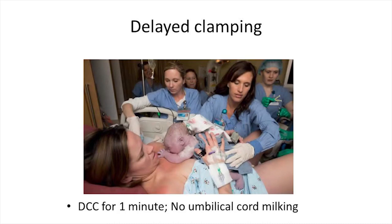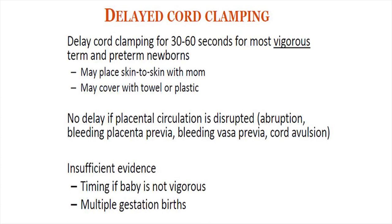Another important component of routine care is delayed cord clamping after 1 minute. Umbilical cord milking is not recommended as part of NRP. Delayed cord clamping is recommended for all vigorous babies, but is not recommended if there is placental circulation disruption — mainly abruption, bleeding placenta previa, bleeding vasa previa, or cord avulsion. There is insufficient evidence for delayed cord clamping if the baby is not vigorous or in multiple gestation births.